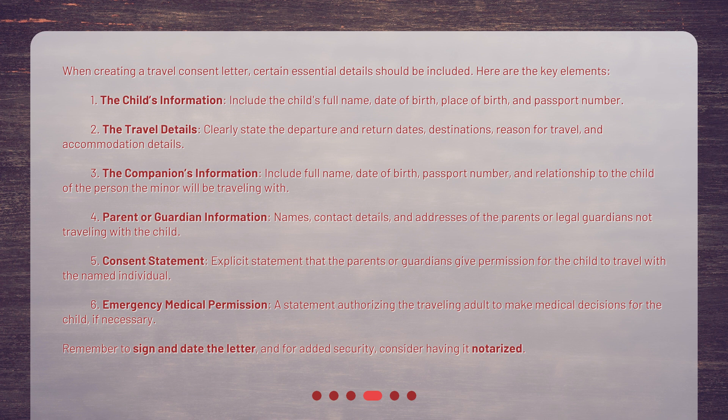5. Consent statement: an explicit statement that the parents or guardians give permission for the child to travel with the named individual. 6. Emergency medical permission: a statement authorizing the traveling adult to make medical decisions for the child if necessary. Remember to sign and date the letter, and for added security, consider having it notarized.